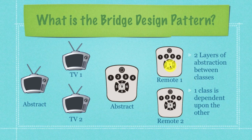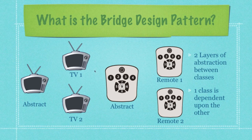Those very specific differences lie with button nine. Remote one, whenever button nine is pressed, is going to mute the sound. Remote two, let's say it's connected to a DVR, is going to pause the television. So along the way, we're adding different layers of functionality with an abstract class lying between — two layers of abstraction between classes, and one class that is dependent upon the other.